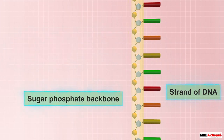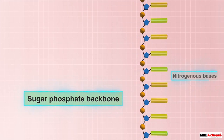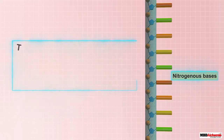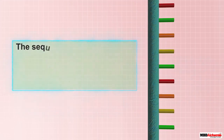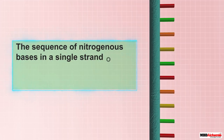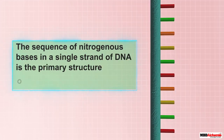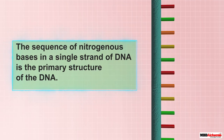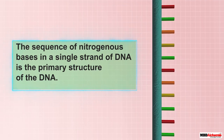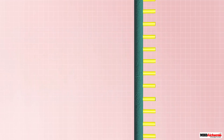A strand of DNA has a sugar-phosphate backbone to which nitrogenous bases are attached. The sequence of nitrogenous bases in a single strand of DNA is the primary structure of the DNA.